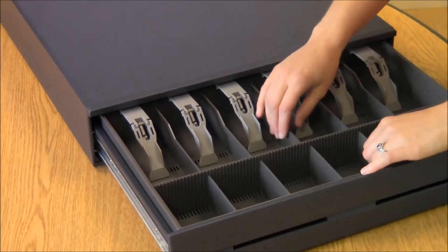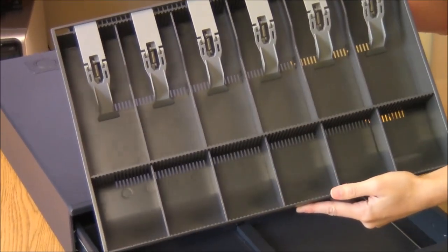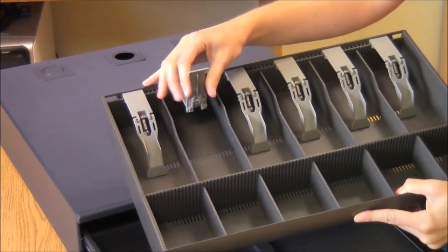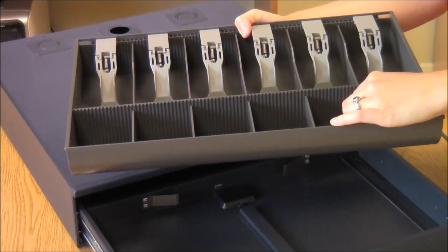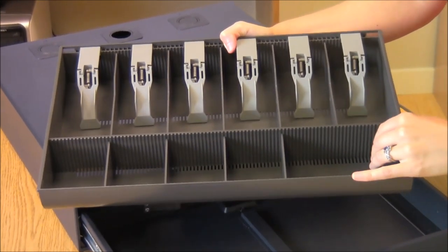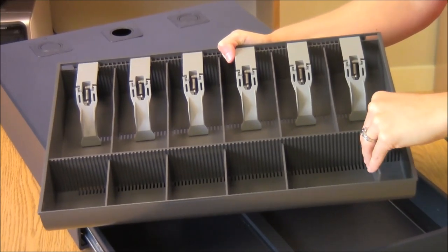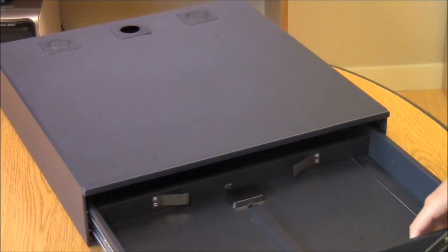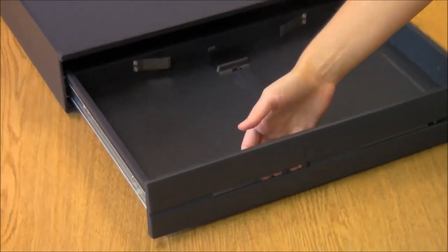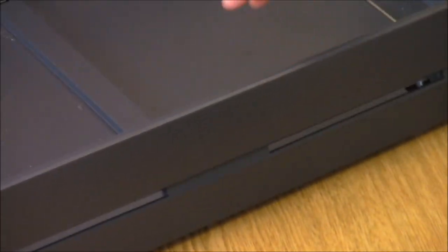Pulling the drawer out, you can see that it has an adjustable six-bill, six-coin tray. These can be removed and adjusted if you need to move them around. Sorry about that. There you go. And you have two media slots for putting in checks or coupons or other large bills.